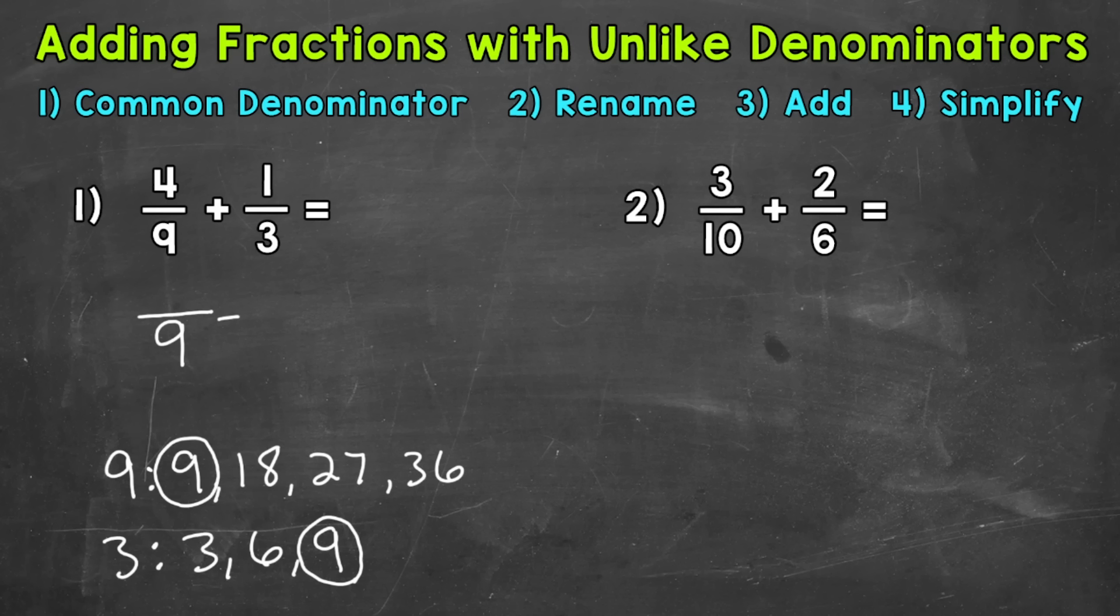So we'll start with 4 ninths. Well, 4 ninths already has a denominator of 9, so we don't need to rename. So we can just bring the 4 down. As far as 1 third, we need to think 3 times what equals 9. How do we get 3 to equal 9? Well, we know 3 times 3 equals 9.